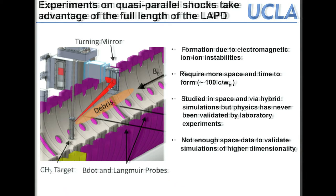This geometry gives us about 15 meters of plasma to interact with. Shock formation here depends on electromagnetic ion-ion instabilities. For ions moving along the field there is essentially no diamagnetic bubble — only a small one for ions moving at angles. What is important is having super-Alfvénic debris ions moving along the plasma, and these shocks require about 100 ion inertial lengths, but we have much more space along this direction.